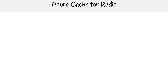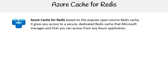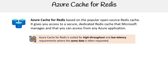So we just took a look at Redis. Now let's talk about Azure Cache for Redis. Azure Cache for Redis is based on the popular open source Redis cache or data store. It gives you access to a secure, dedicated Redis cache that Microsoft manages, and that you can access from any Azure application. All major cloud service providers have a managed Redis service or database because it's just super useful. Azure Cache for Redis is suited for high throughput and low latency requirements where the same data is often requested.